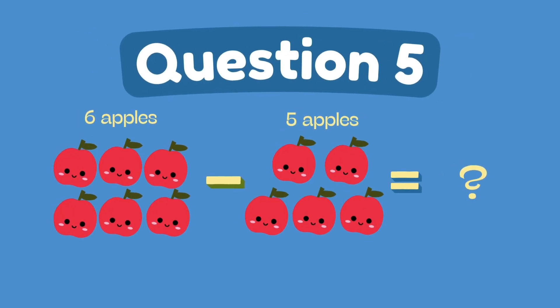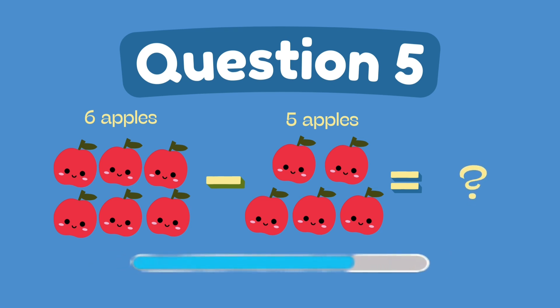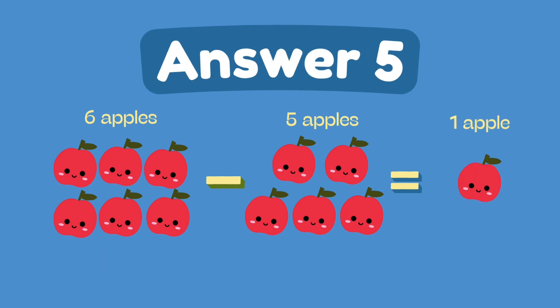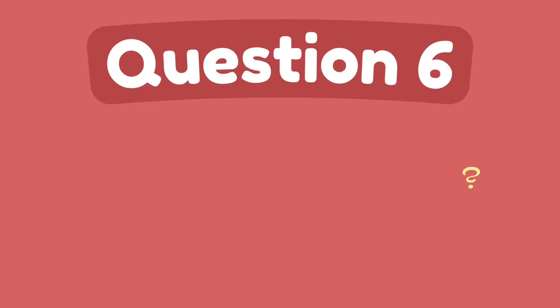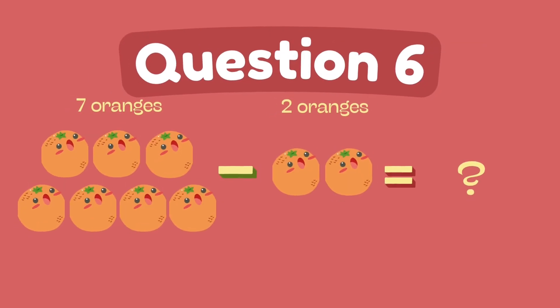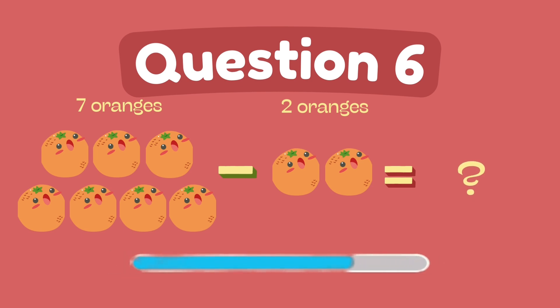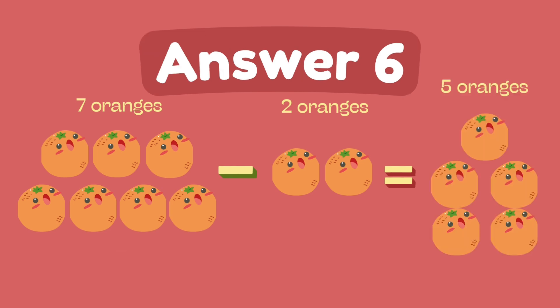What is 6 minus 5? The answer is 1. What is 7 minus 2? The answer is 5.